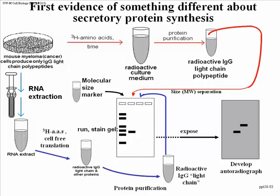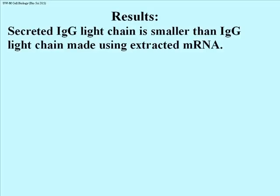The IgG made by in vitro cell-free translation is also showing up. When this experiment was done, the expectation was that the second band should be the same size as the material made by the cells. As you can see, it represents a spot on the gel that was migrating more slowly — it didn't travel as far from the well — as the secreted IgG produced by the culture. On these gels, faster-moving molecules are smaller and slower-moving molecules are larger. The results suggest the secreted IgG light chain is smaller than the IgG light chain purified from the cell-free translation product.